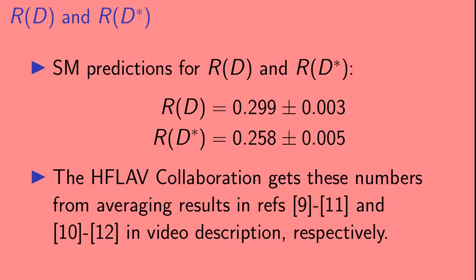The standard model predictions for R(D) and R(D*) used by the heavy flavor averaging group are 0.299 plus or minus 0.003 and 0.258 plus or minus 0.005 respectively. They get these numbers from averaging results in references 9-11 and 10-12 that you can find in the video description.